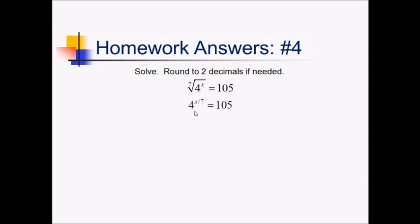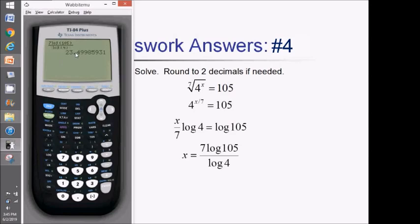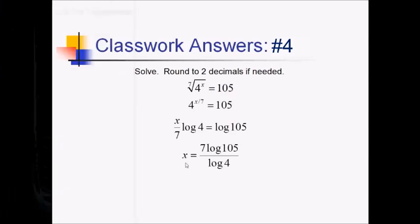So on the left side, I'm going to have x over 7 getting popped out next to the log of 4. On the right side, I've got the log of 105. And then rearranging to solve for x, multiply both sides by 7 and divide by log of 4. So I have 7 log 105 over log of 4. Let me do that on the calculator now. Just to make things a little neater, I'm going to do alpha y equals and use my fancy fraction form here. So I have 7 log of 105 divided by log of 4. And pressing enter, I get 23.50 if I round off to two decimal places.